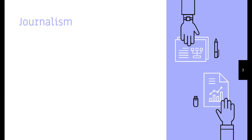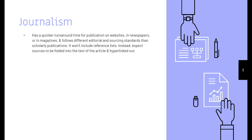Let's dig in a little bit on popular sources, mainly in the field of journalism. Journalism has a much quicker turnaround for publication on websites, in newspapers, or in magazines, and it follows different editorial and sourcing standards than a scholarly publication. So you won't expect to see a reference list at the end of a newspaper article. Instead, you want to expect the sources to be folded into the text of the article and then hyperlinked out in the best case scenario.